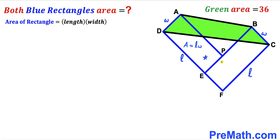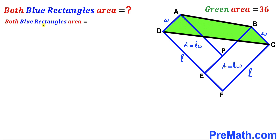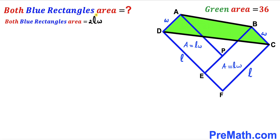Since both rectangles are congruent, the area of rectangle EFCB is also L times W. So the combined area of both blue rectangles is LW plus LW, which gives us 2 times L times W. Our task is now to find the value of L times W.